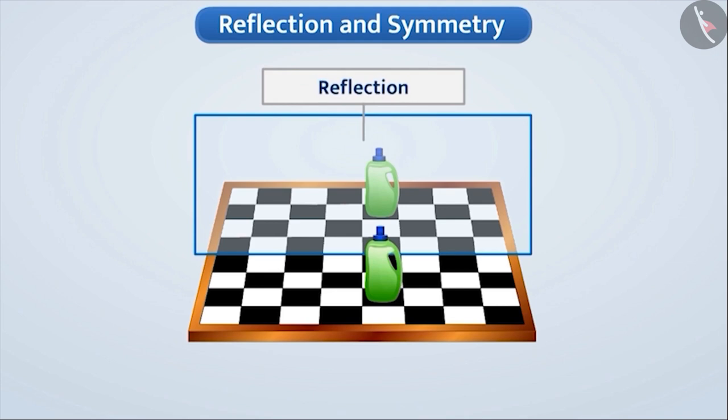Here, we have placed the object in the third square from the mirror. And we can see that the reflection of the object visible in the mirror is also placed in the third square from the mirror.